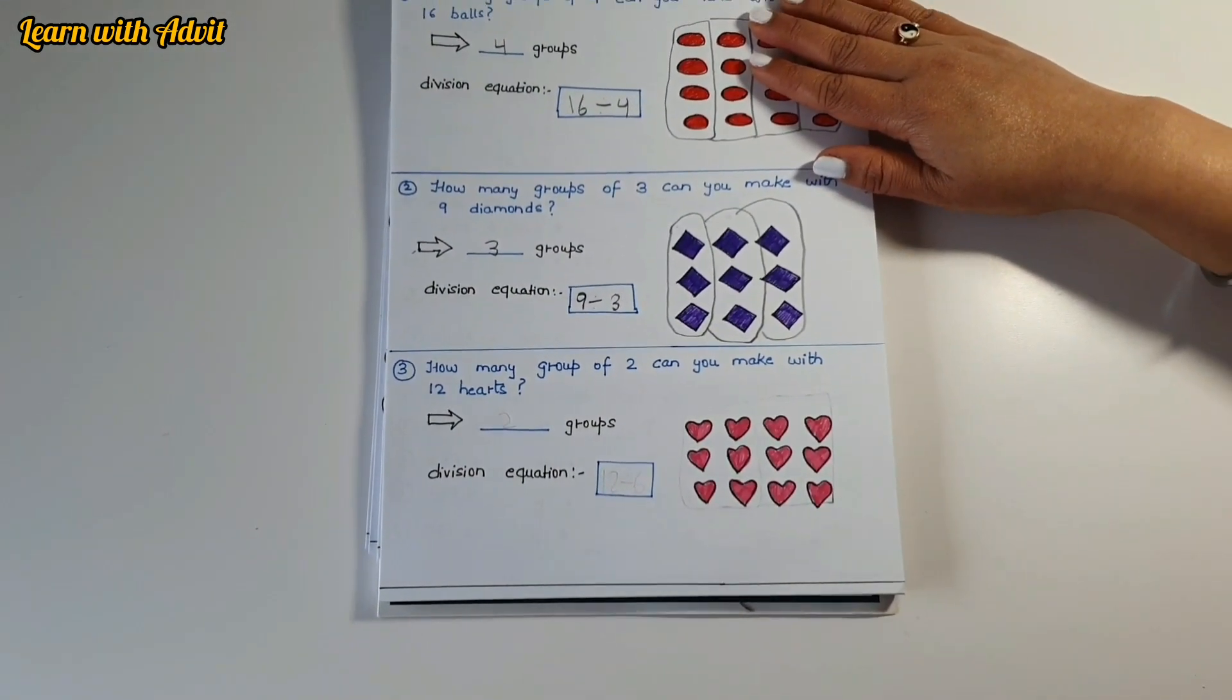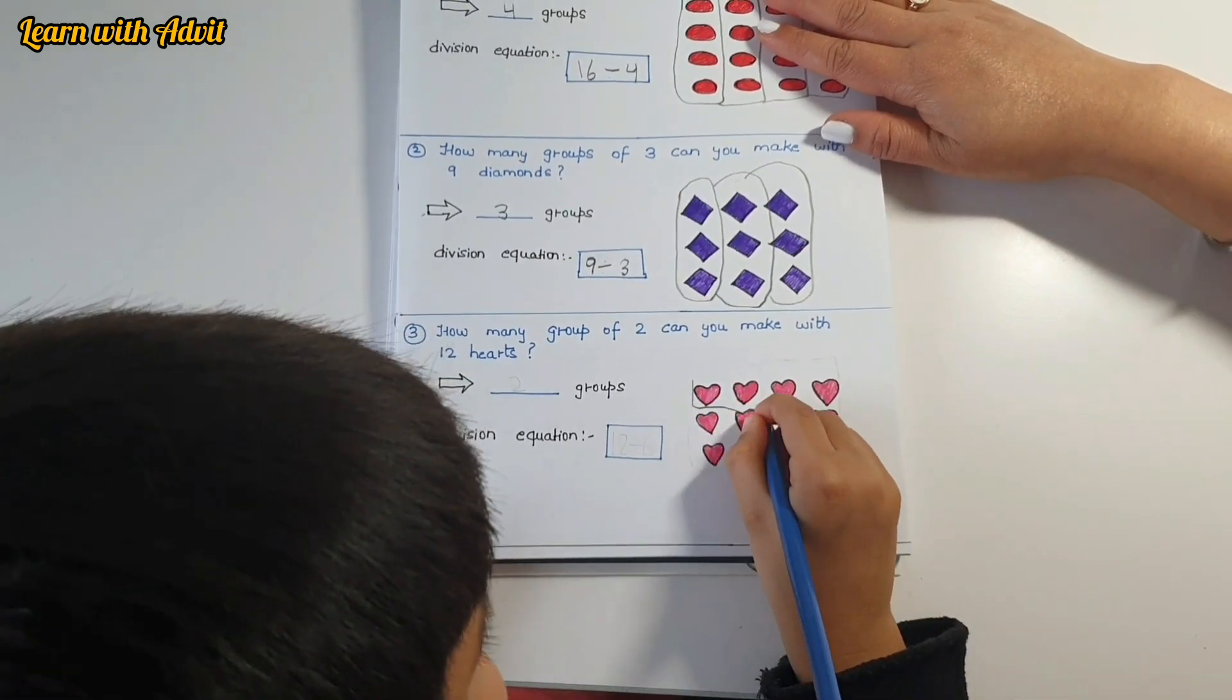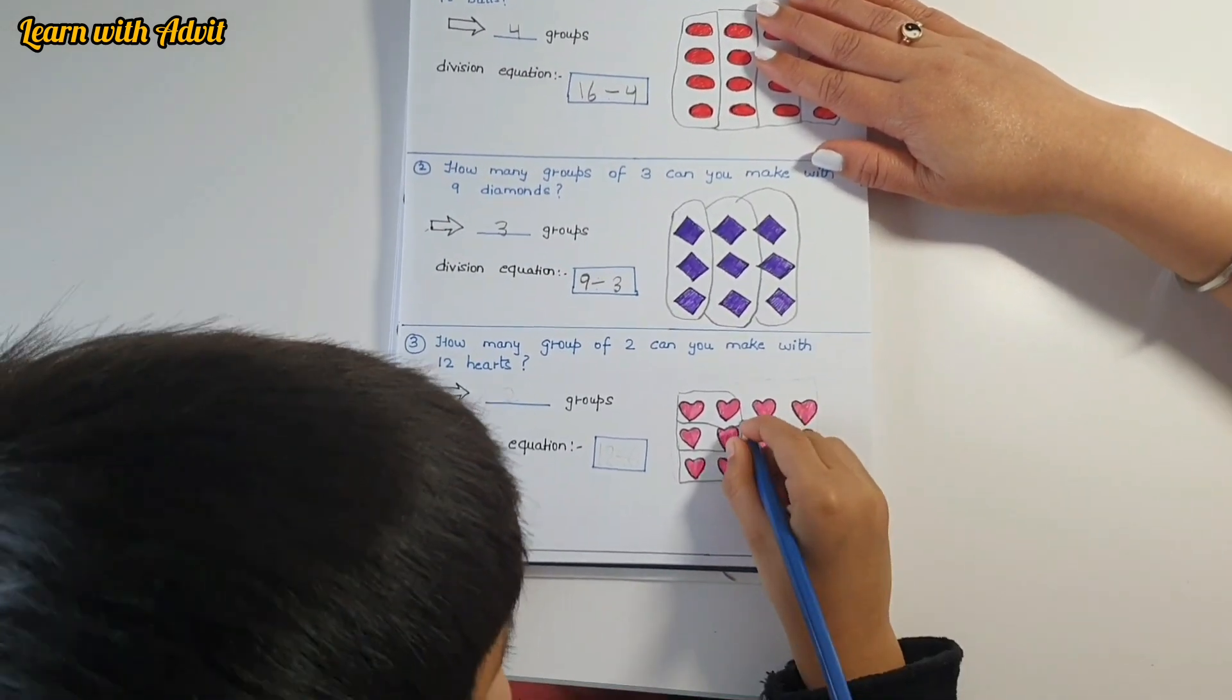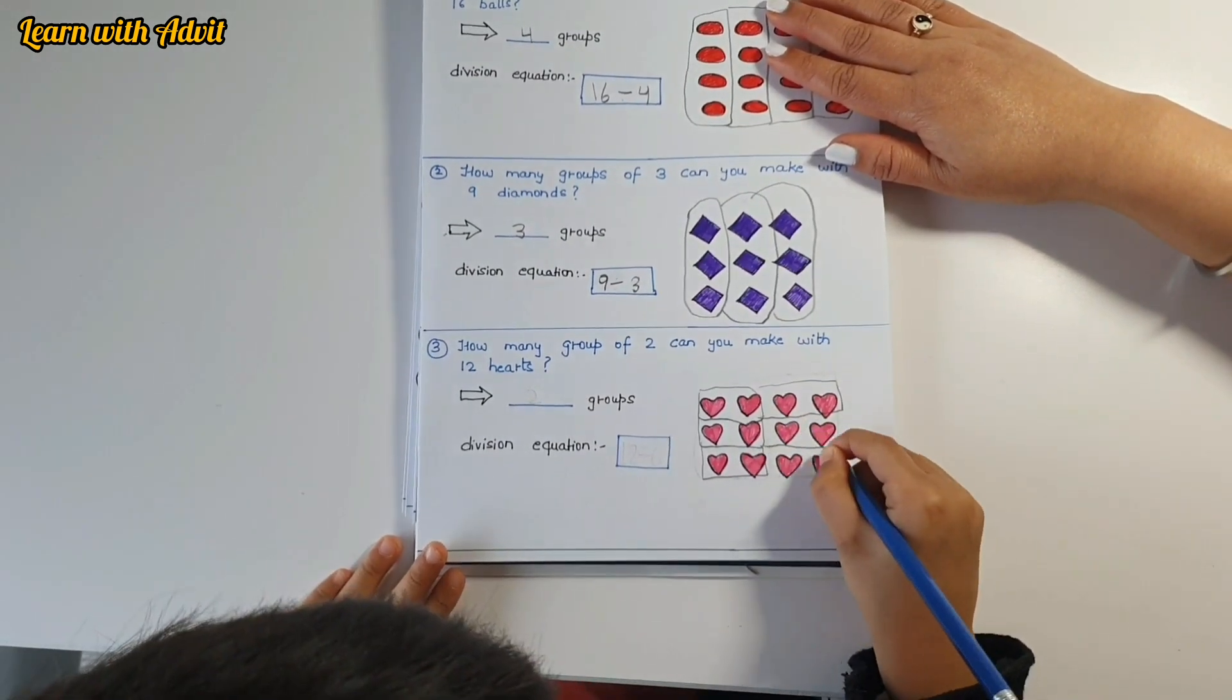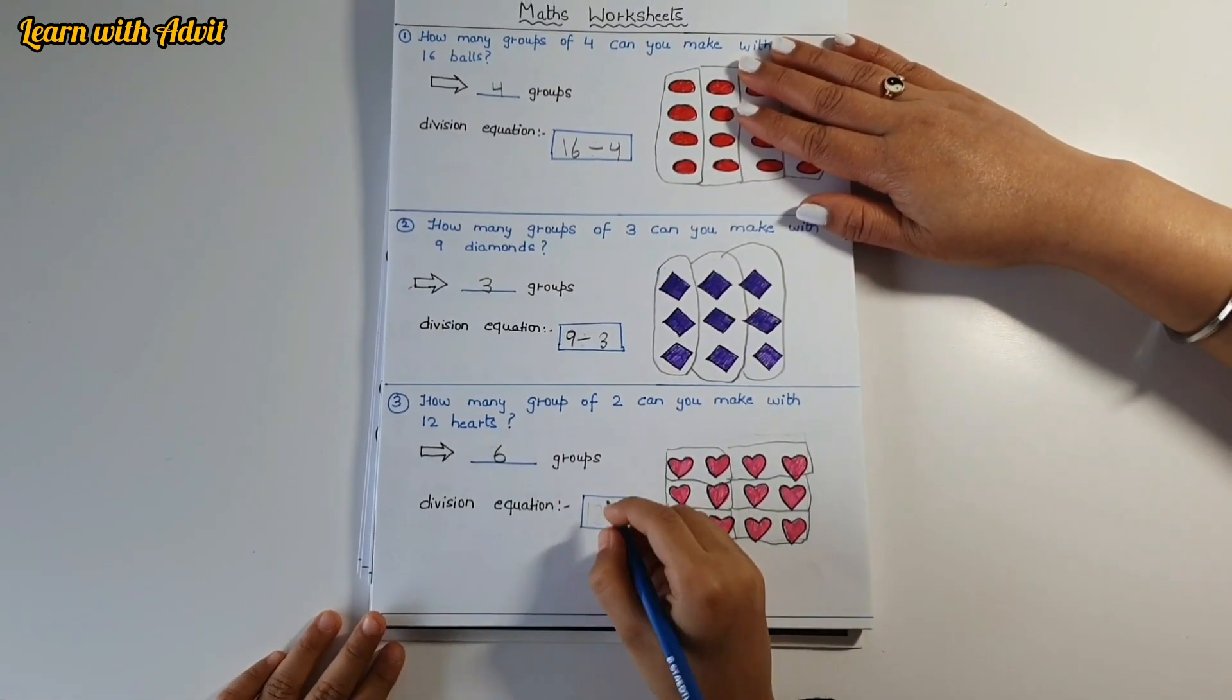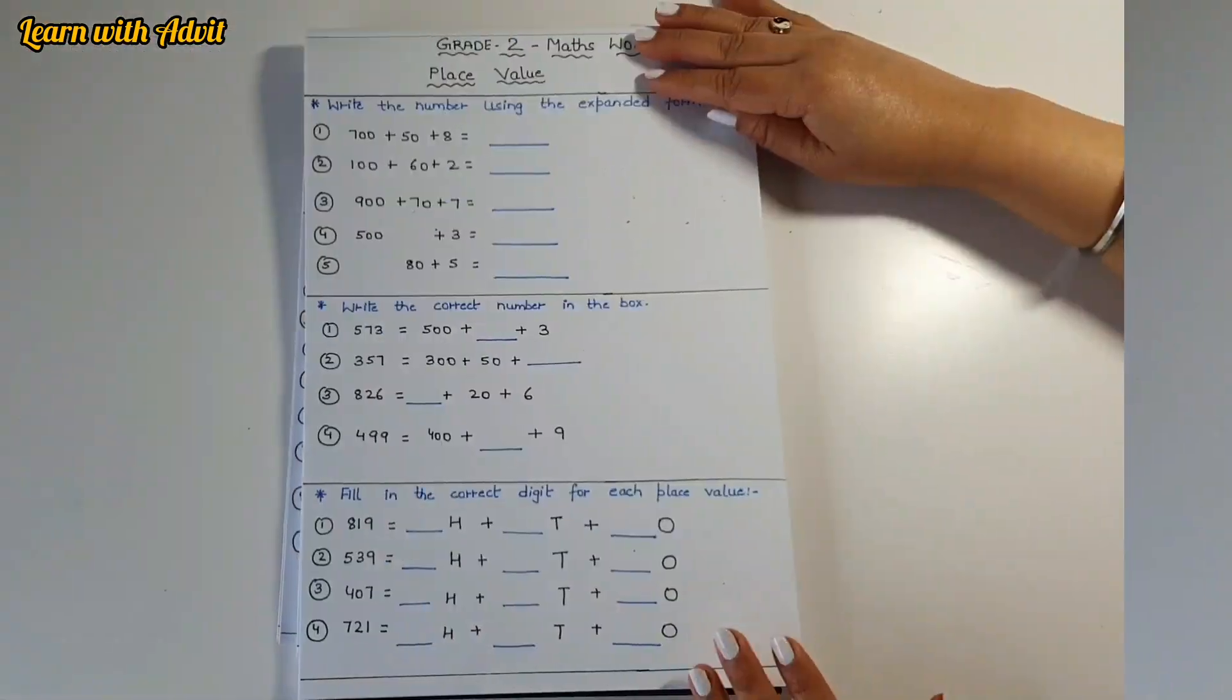How many groups of 2 can you make with 12 hearts? You could make six groups of 2 with 12 hearts. One row of two, two rows of two, three rows of two, four rows of two, five rows of two, six rows of two. Very good, so groups will be 6. Write the division equation: 12 divide by 2.